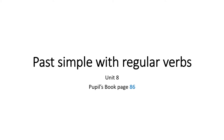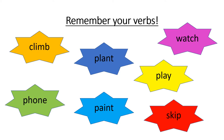Hello everyone! Today we're going to be talking about the past simple using regular verbs. This is from your pupils book page 86. An important thing we need to remember from this unit is: what is a verb? Well, a verb is an action word in the sentence. In this unit you have lots of verbs from your vocabulary.